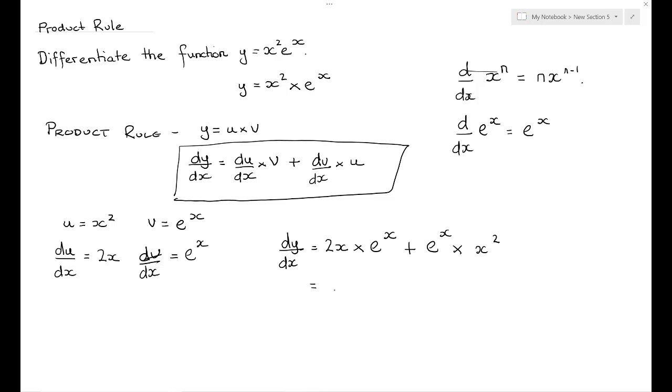So tidying that up a little bit, I see I have 2x e to the x plus x squared e to the x. And then if we really wanted to tidy up further, we could factorize out e to the x because it appears in both terms, and we could also factorize out one power of x.